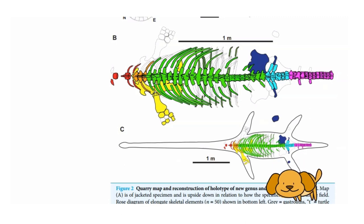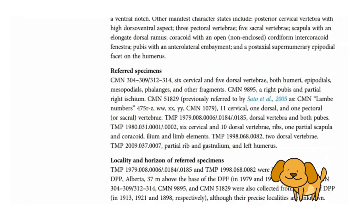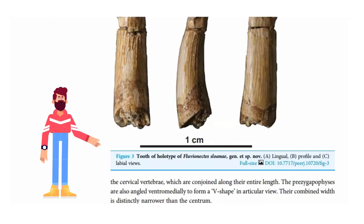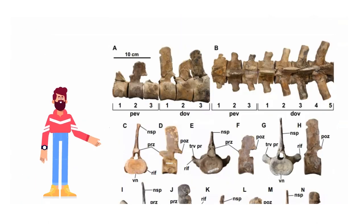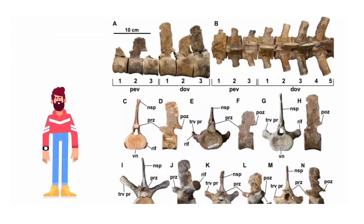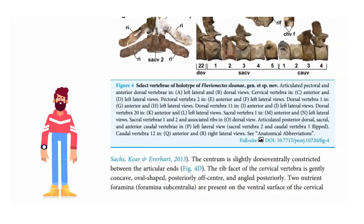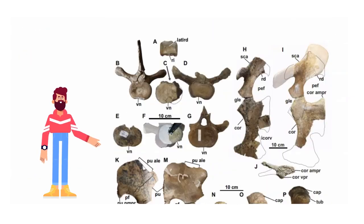This study reports on a recently collected and prepared specimen, which represents the most complete elasmosaurid yet collected from the Dinosaur Park Formation. That is so intriguing Boson. This specimen preserves the trunk region, the base of the neck and tail, a partial fore and hind limb, and tooth, and is sufficiently complete to be assigned as the holotype of a new genus and species.